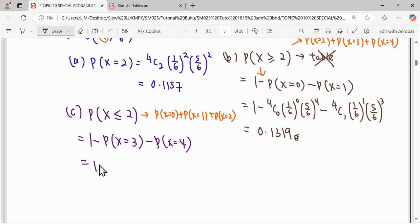We calculate X equals three, which is 4C3 times one over six to the power three times five over six to the power one. Then 4C4 times one over six to the power four times five over six to the power zero. Calculate using your calculator and give your answer to more than three significant figures.